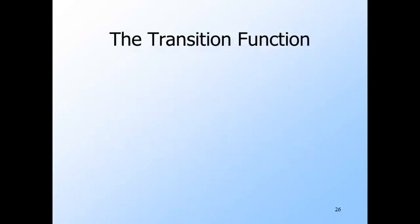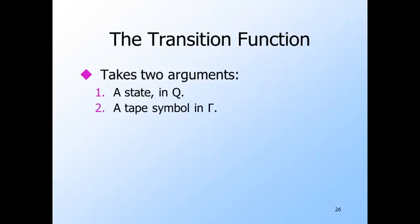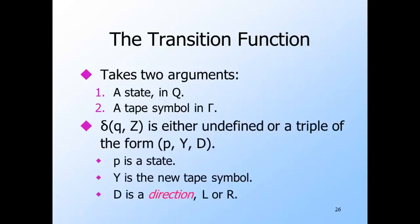Now let's see the transition function delta for a Turing machine. The Turing machine is deterministic, and it does not have to have a move in any situation. Delta takes two arguments: the state and the symbol scanned by the tape head. Delta of (q, z) for state q and tape symbol z can be undefined, in which case the Turing machine halts. But if delta of (q, z) is defined, then it is a triple (p, y, d), where p is the new state, y is the symbol that replaces z in the square being scanned, and d is the direction — either L for left or R for right — the tape head moves by one square.